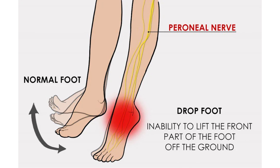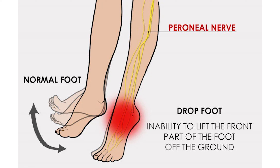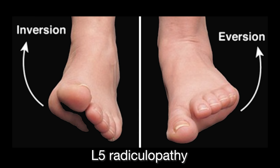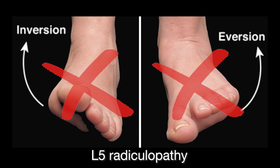Patients with a peroneal nerve injury have difficulty raising the foot up, and also have difficulty with eversion of the foot, but they can invert the foot. Patients that have an L5 radiculopathy causing a foot drop have problems with both eversion and inversion.